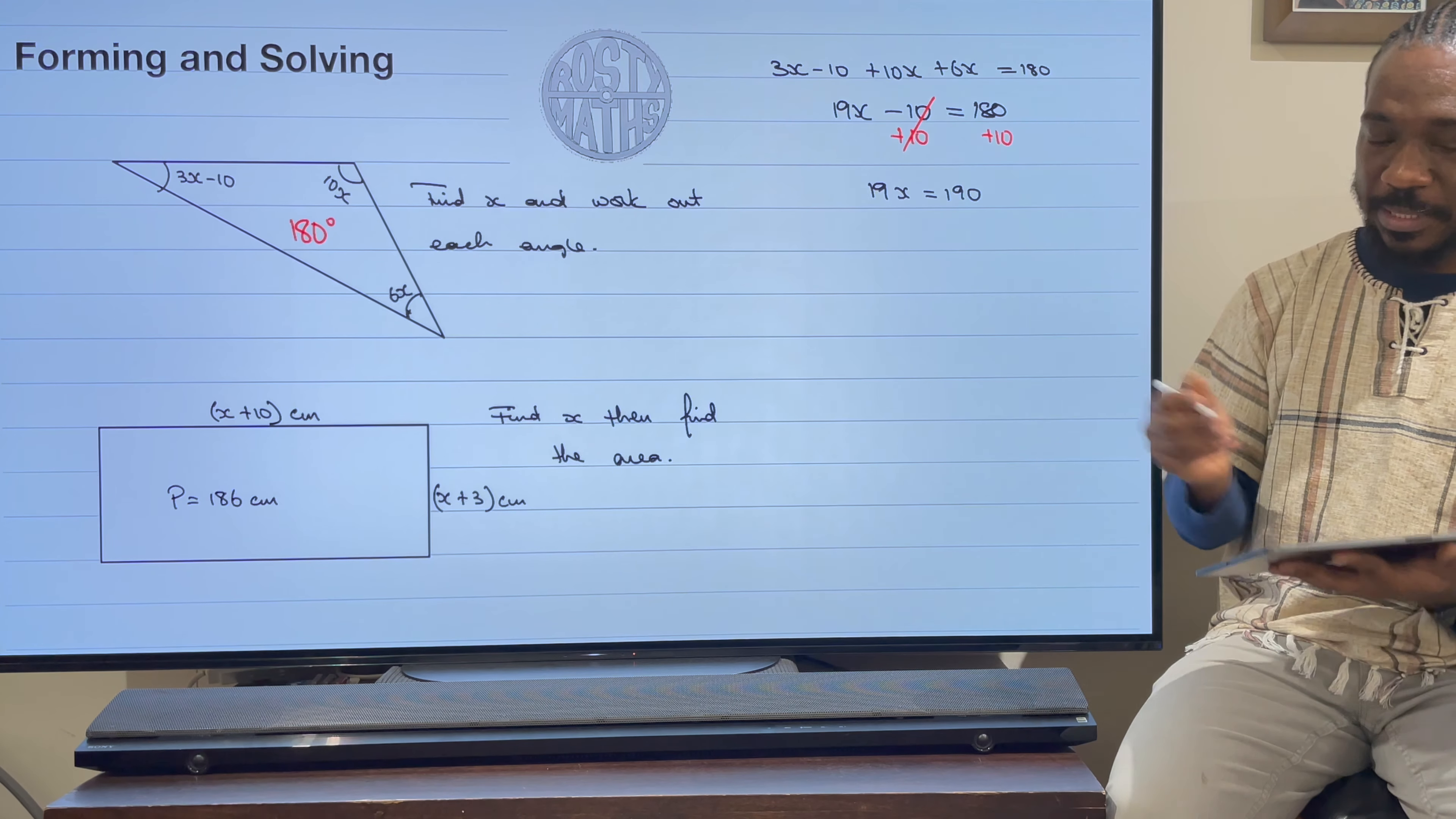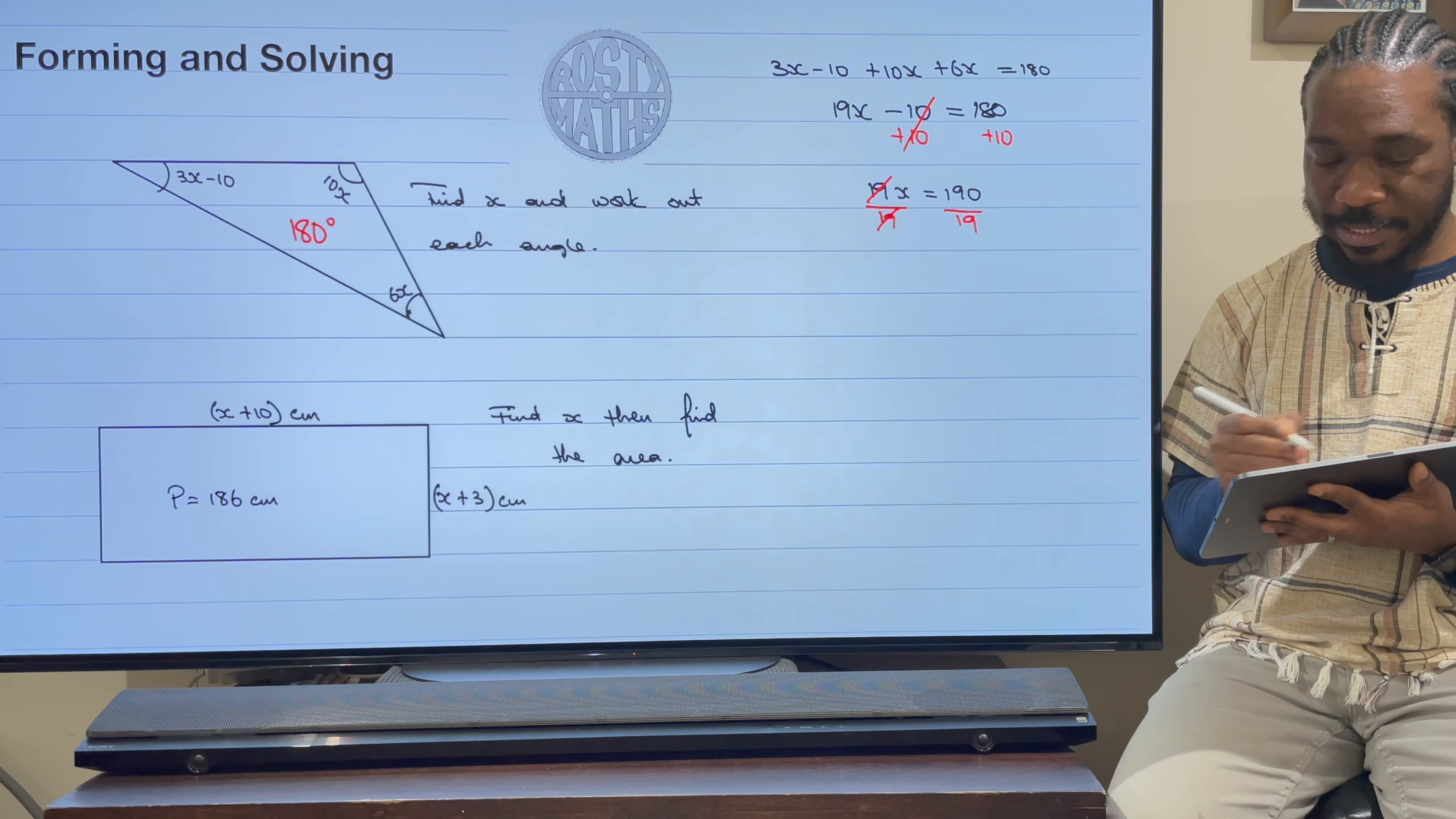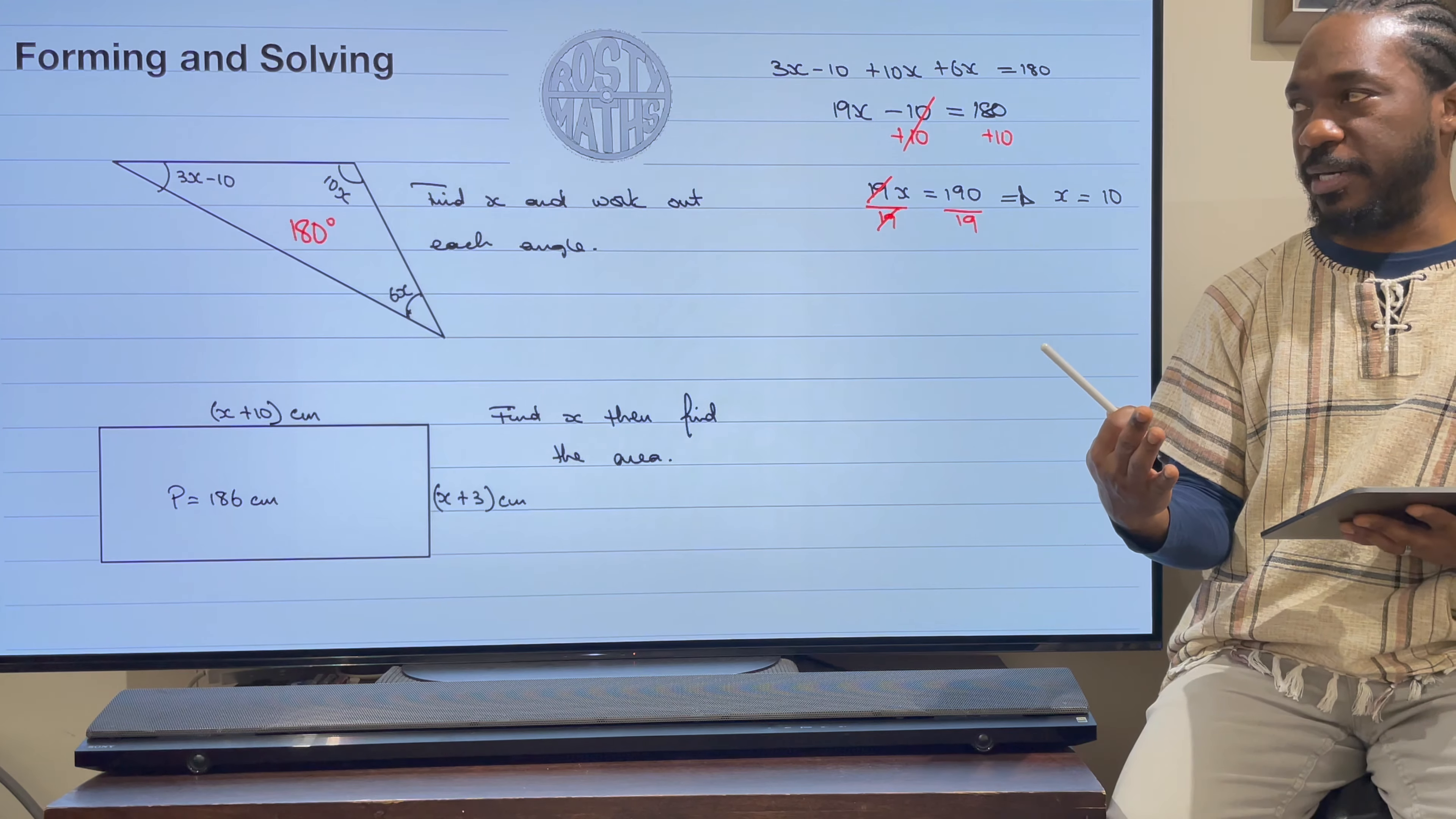And then using my balancing method again, I'm going to divide by 19, divide by 19. This is the inverse operation that we're using here. These 19s are going to cancel out, therefore giving me that x is equal to 10. 190 divided by 19 is 10.